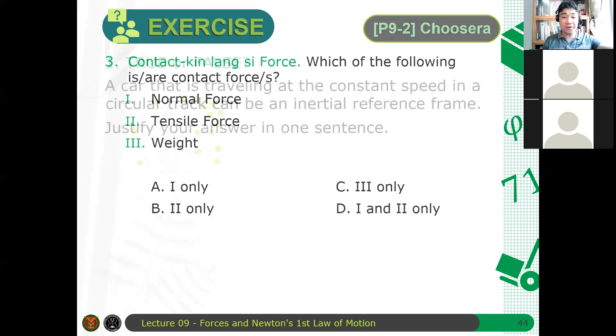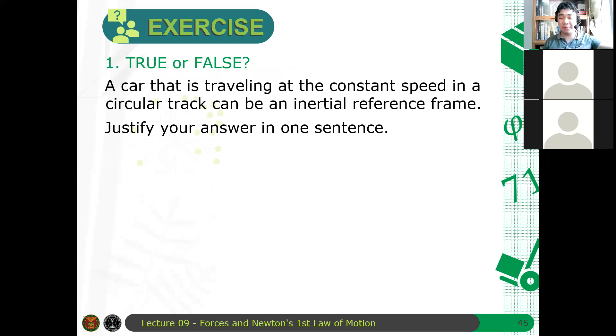Again, that's the answer. For the first one. True or false? A car that is traveling at constant speed on a circular track can be an IRF. Is it true or false? It's false. Correct. Why? Because what? Sir, may acceleration. Exactly.